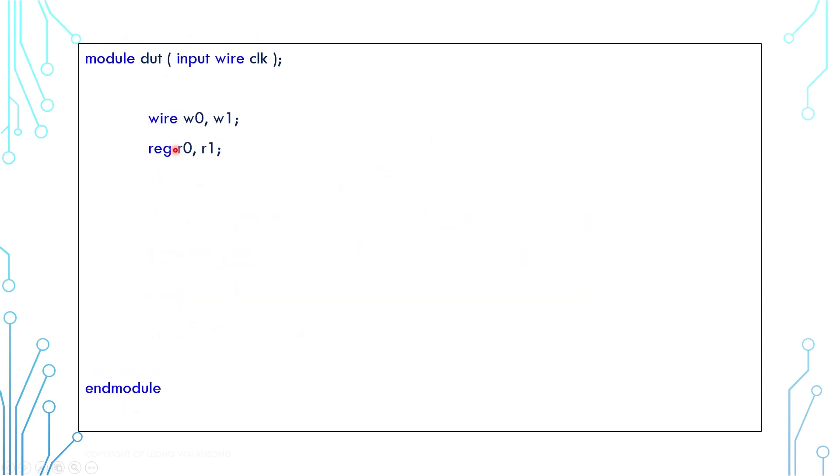The difference between wire and reg is that there is a rule on how to use them. Wire should be controlled using assign statement, whereas reg should be set inside always block or initial block. Having said that, this is not a hard rule.